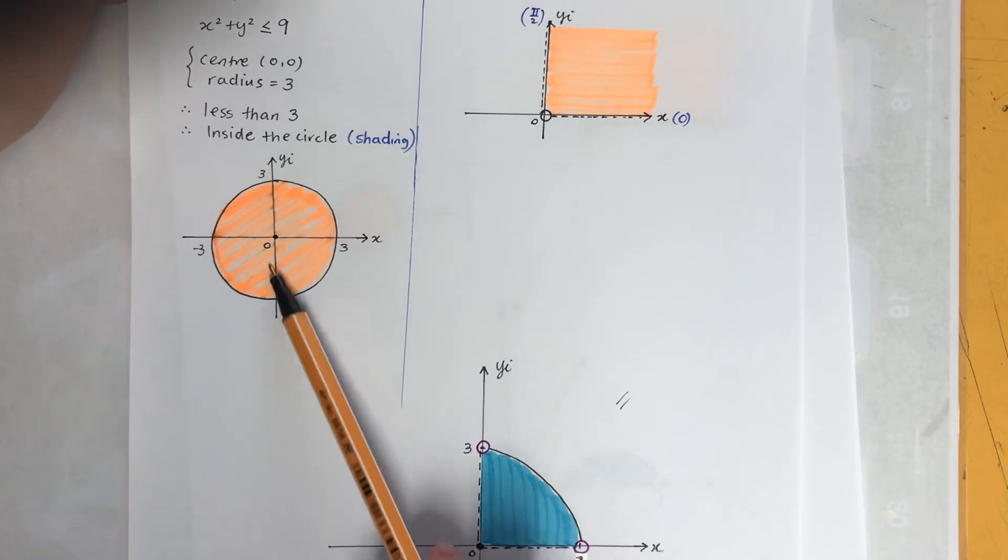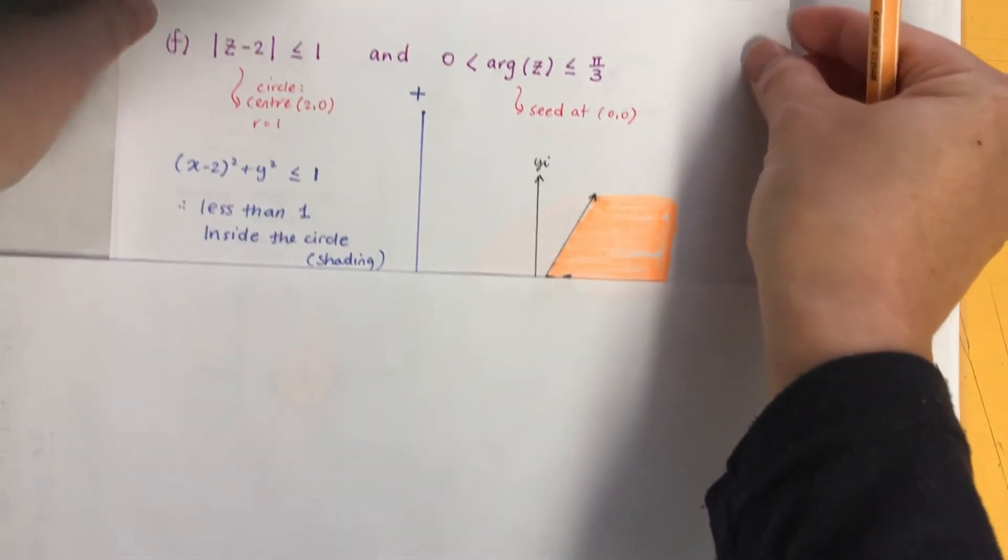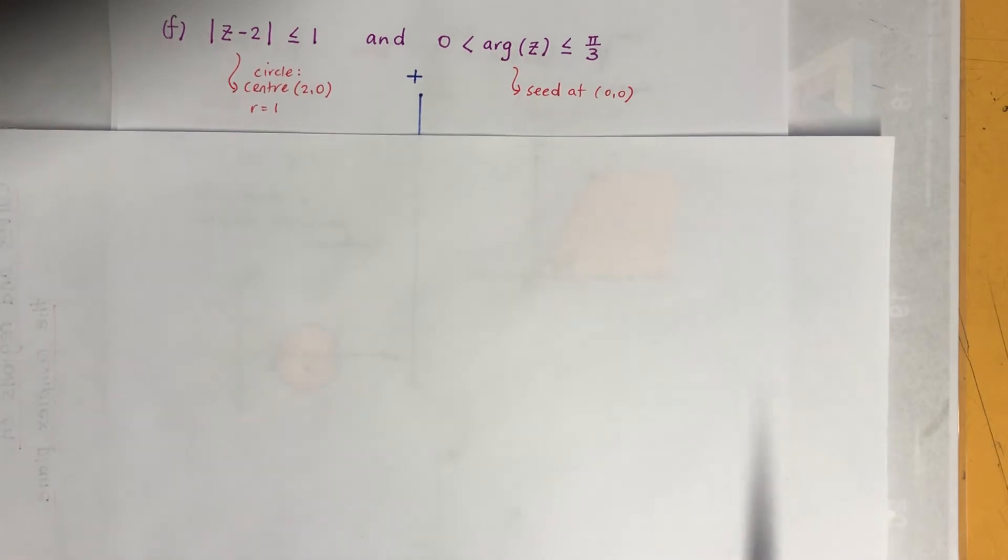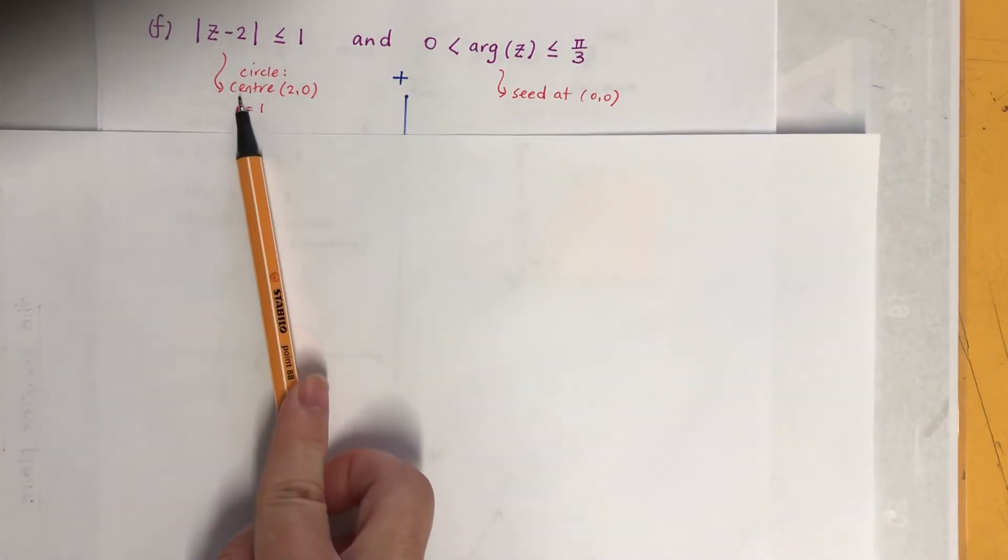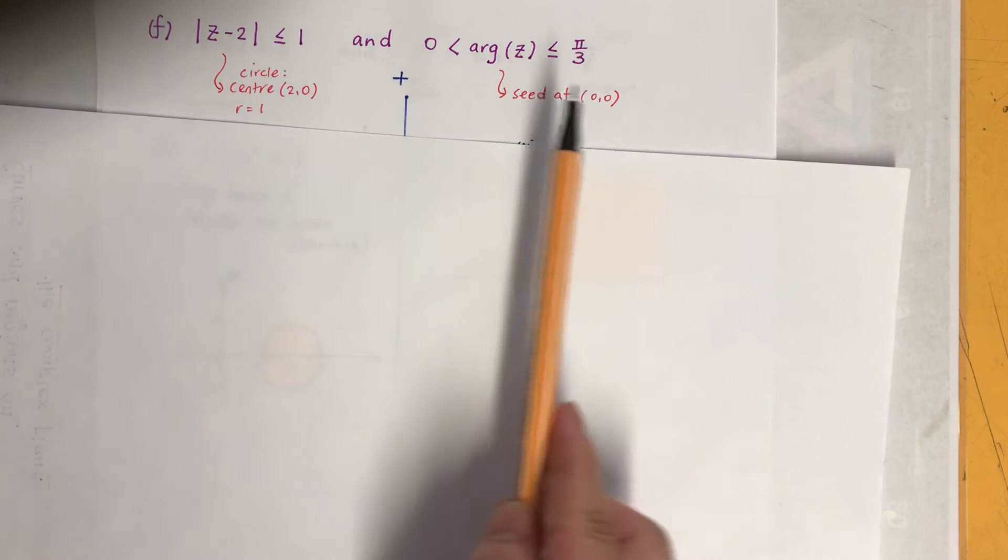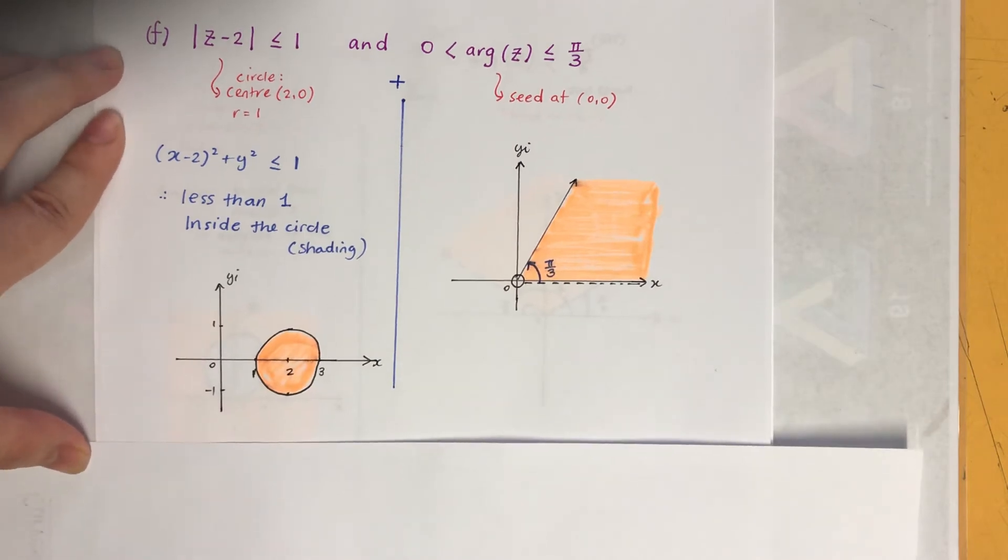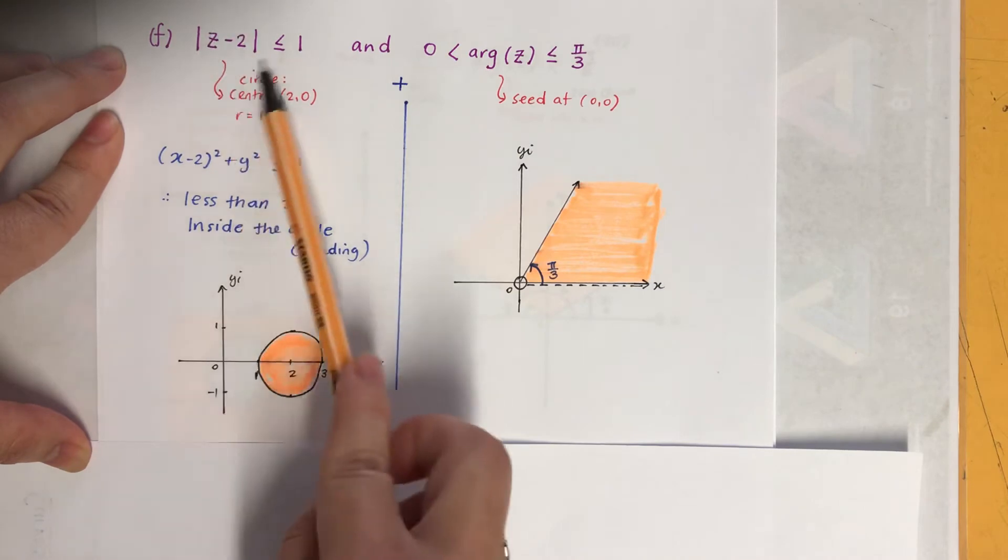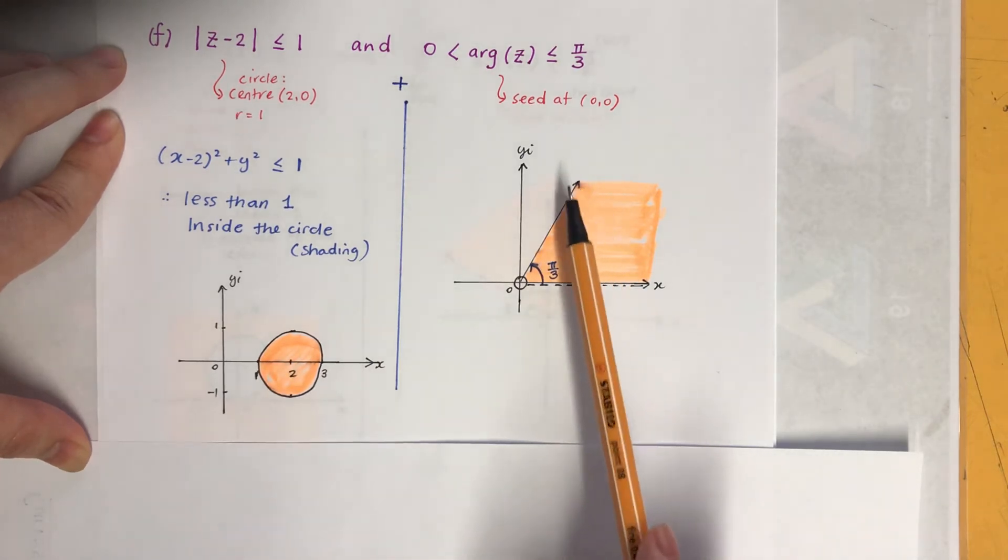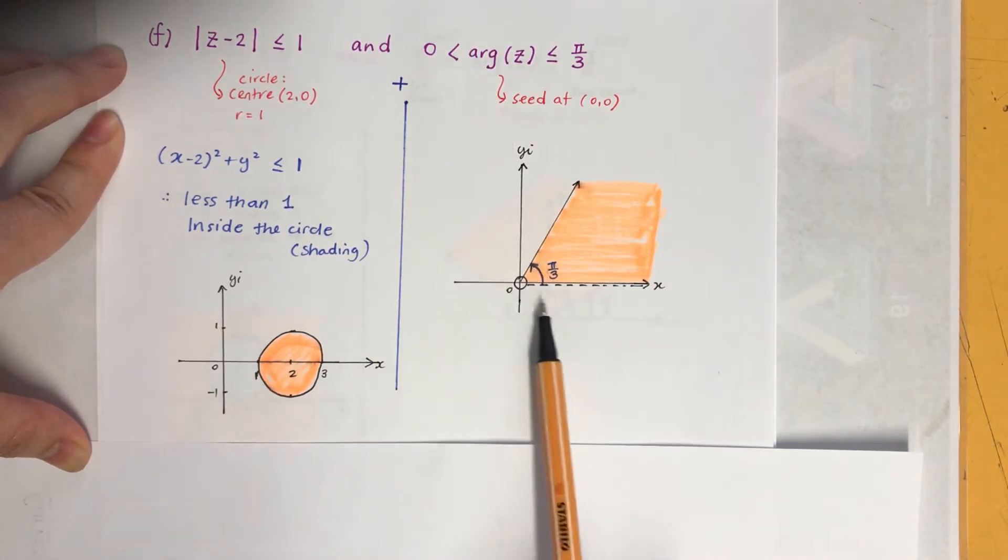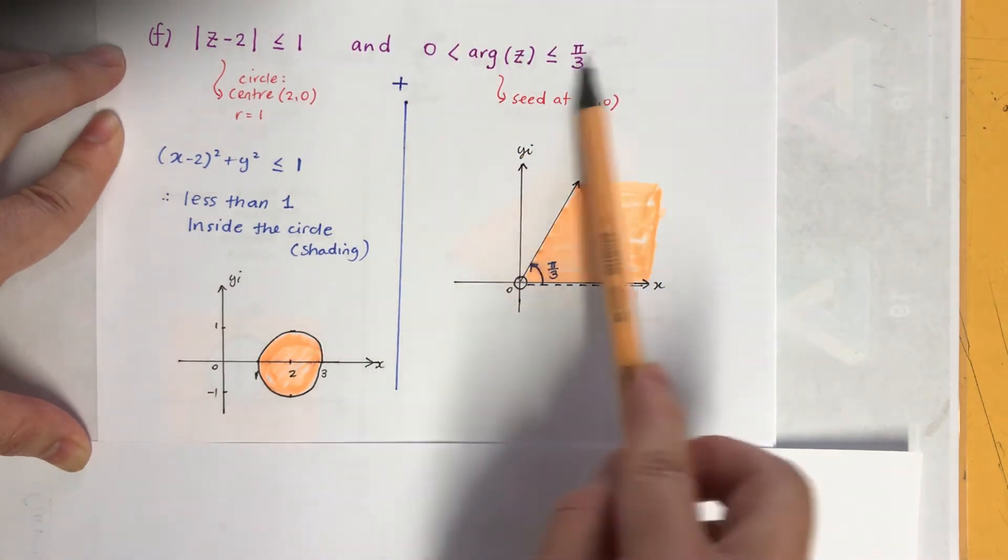Next one, all right. Again I'm going to set the graph separately for modulus part and the arguments part. I can see it's a circle with the center two zero and a radius one. And that's a seed starting point is zero zero. If I sketch that it will look like this. Again, the whole circle is less than one, less than the radius, so it's going to be shaded inside circle. Zero is not included so I put the dotted line there. And it goes up to pi over three, that's what I've got. And this format is in between obviously, so in between we shade it.